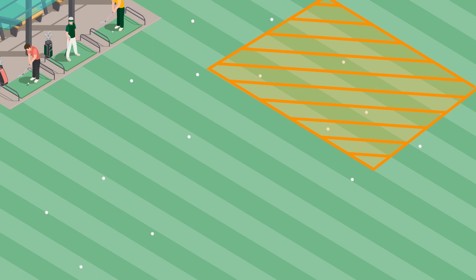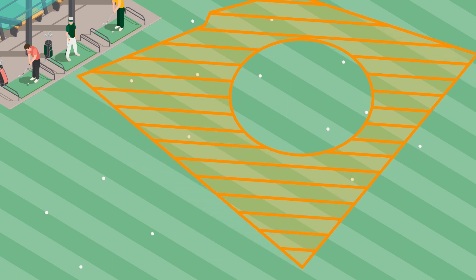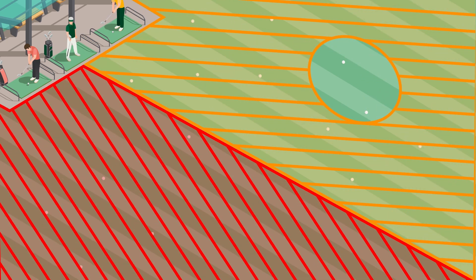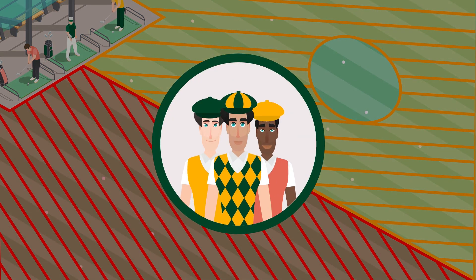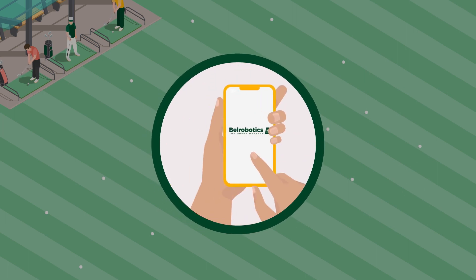GPS RTK technology allows you to delimit areas and customize its workspace. You can easily set up areas where the robot will not mow or even no-go zones that will prevent the robot from entering, according to the attendance of your club and the profile of the players present. The robots can be controlled from the palm of your hand through our dedicated app.